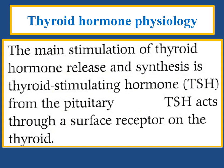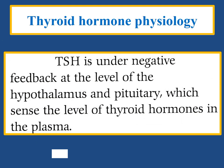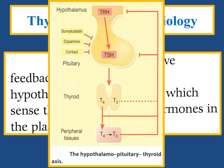The physiology of thyroid hormones. The main stimulation of thyroid hormone release and synthesis is thyroid-stimulating hormone, TSH, from the pituitary. TSH acts through a surface receptor in the thyroid. TSH is under negative feedback at the level of the hypothalamus and pituitary, which senses the level of thyroid hormones in the plasma. The hypothalamus releases TRH, which stimulates TSH secretion from the anterior pituitary, and TSH stimulates secretion of thyroid hormones T4 and T3. T4 and T3 in turn result in suppression of TRH and TSH secretion.